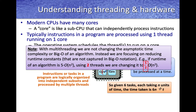Given T threads and some number of tasks, we can reduce the overall runtime proportional to the number of threads being used. This is the advantage of multi-threading. However, it is important to keep in mind that multi-threading does not change the asymptotic time complexity or Big-O of an algorithm — instead it reduces the runtime constants. For example, if an algorithm takes 5·O(n²) with one thread, using two threads decreases the runtime by a factor of 5/2, reducing the constant but not the complexity.